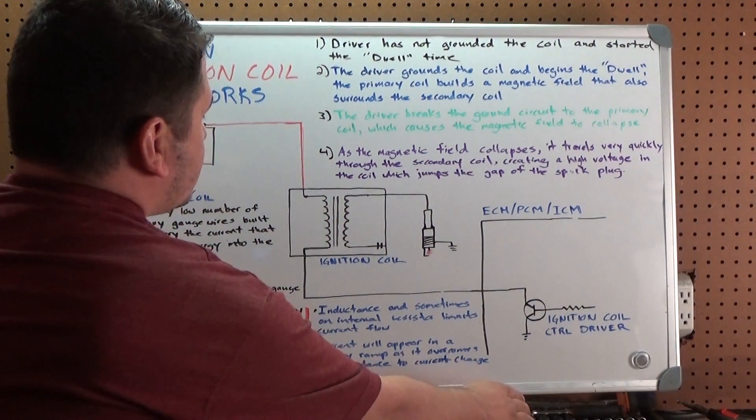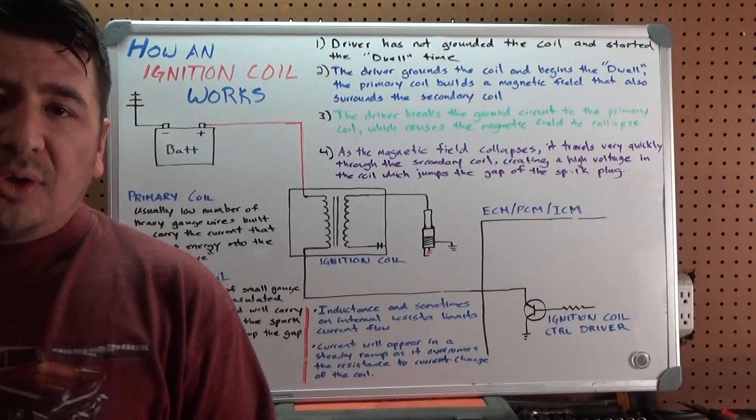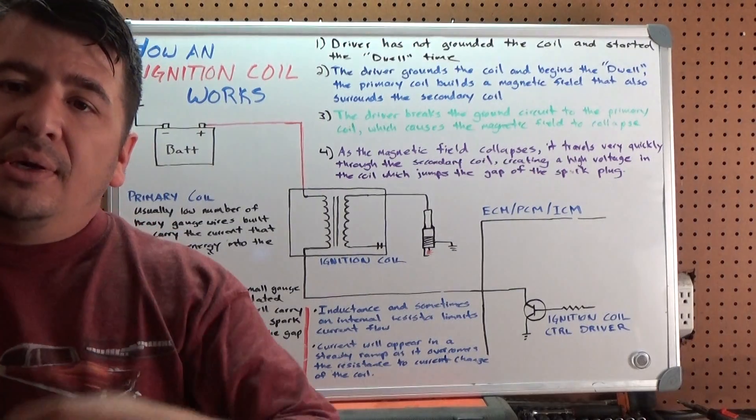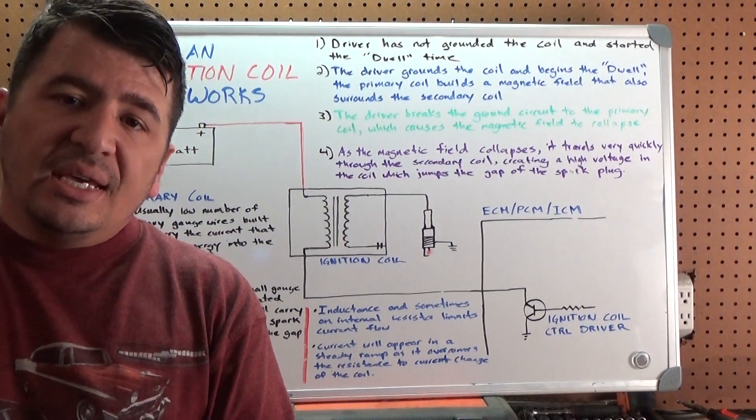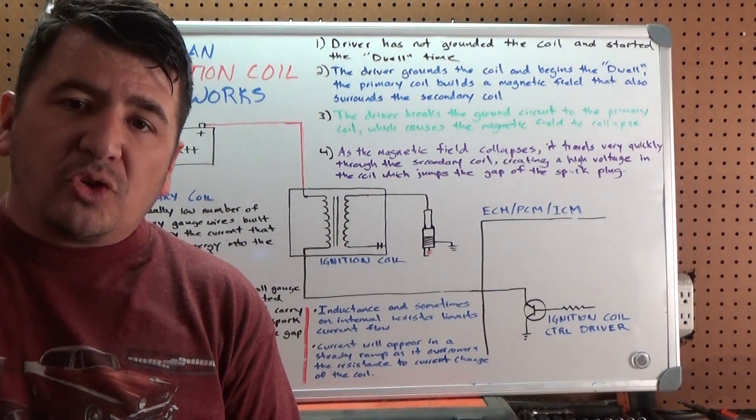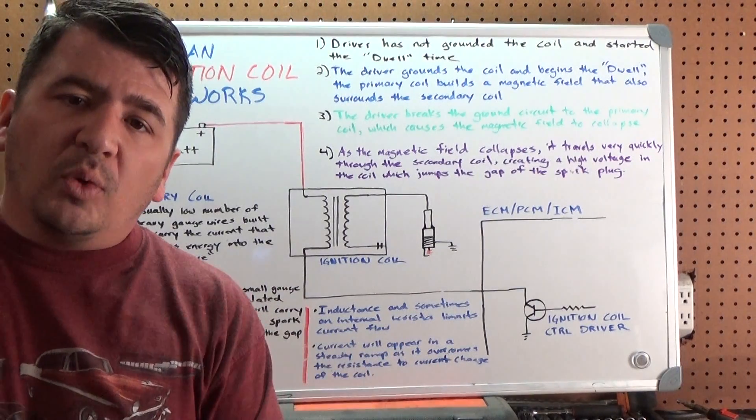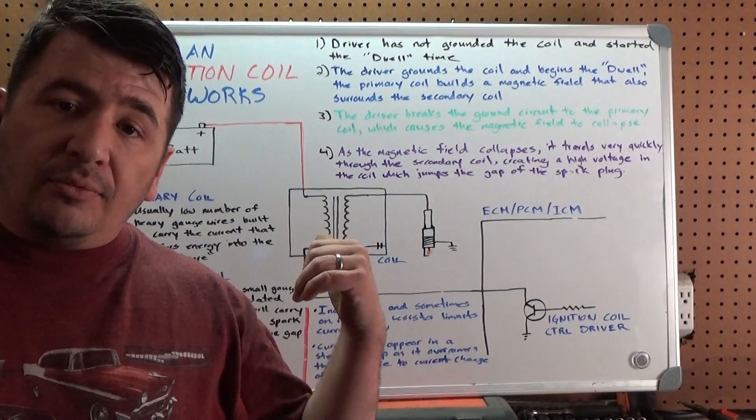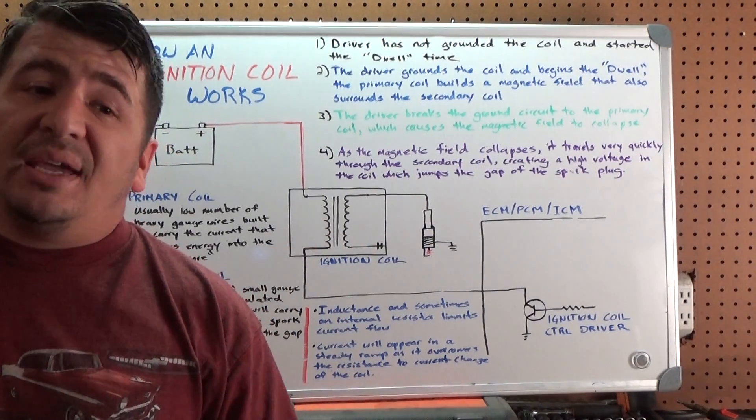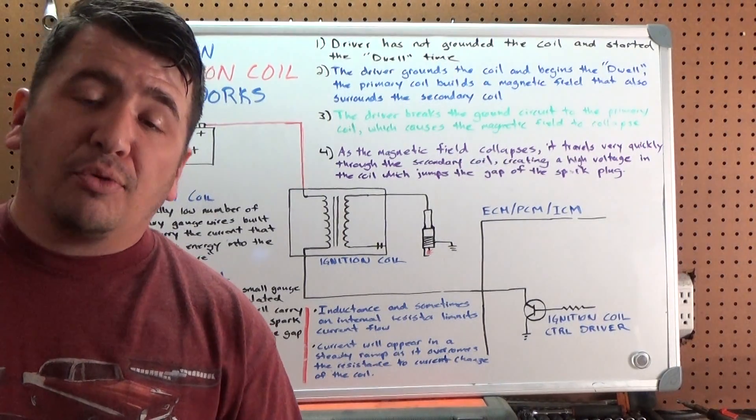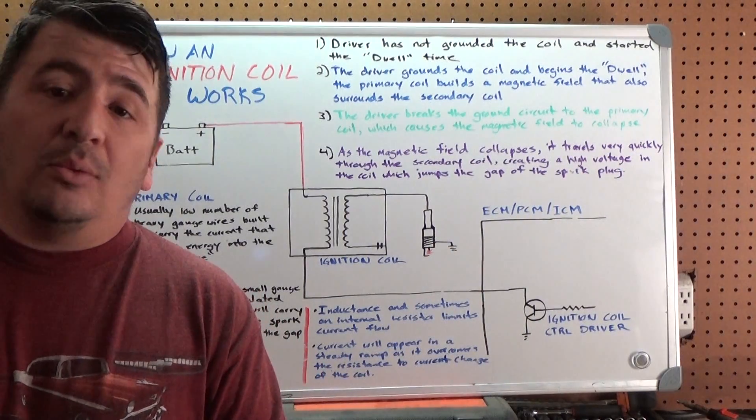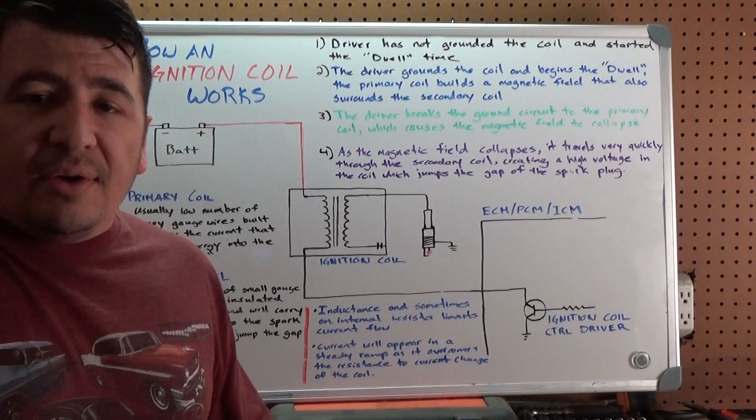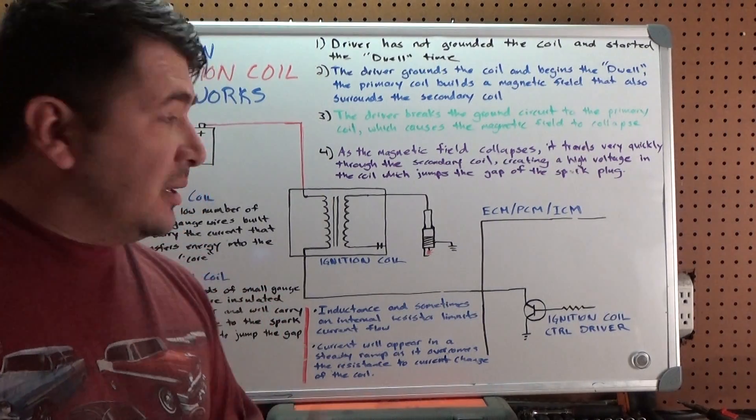At the same time, if you can look at the current ramp, you'll see the current start at nothing and slowly build up until this driver breaks the circuit. Then you'll see the voltage shoot way up because you're going to get a voltage spike in the primary coil. It's not 20, 30, 40, 50,000 volts like some of the secondary coils, but you're going to get a voltage spike, and it's not uncommon to see 70, 80, 100 volts in the primary coil, but it's just for less than one millisecond. What we're going to do now is go out to a vehicle where I've got the lab scope set up, and we're going to look at what we see as this process takes place.